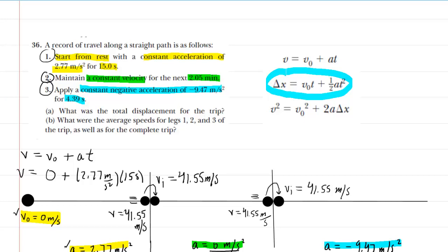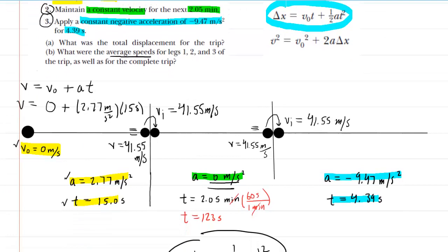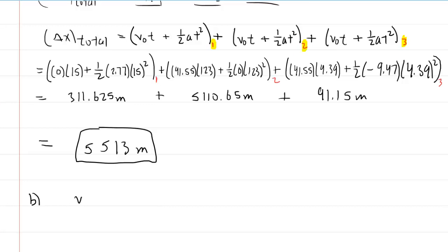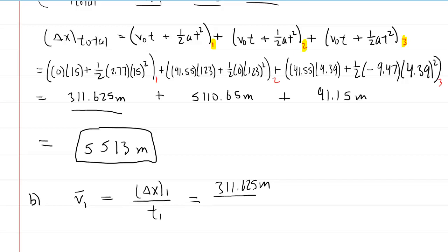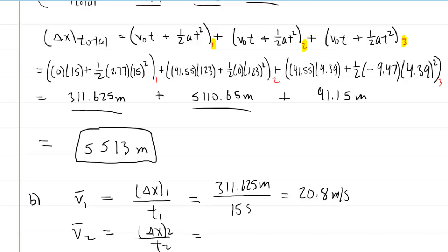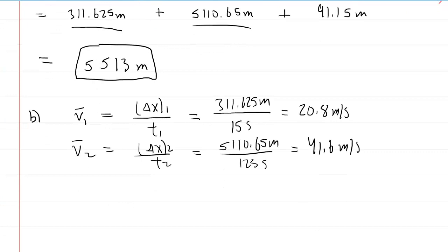Part B asks for the average speeds for all three legs of the journey. Average speed for segment one is distance divided by time: 311.625 meters divided by 15 seconds, giving about 20.8 meters per second. For segment two, 5,110.65 meters divided by 123 seconds gives about 41.6 meters per second.